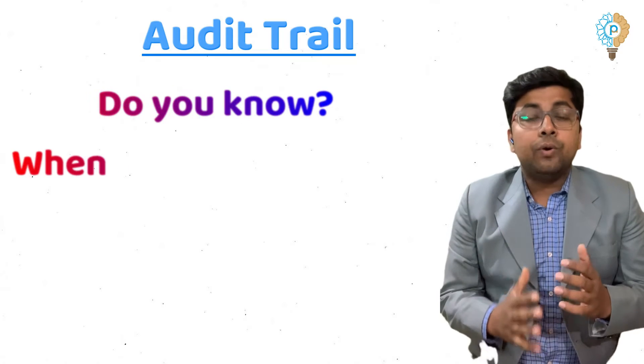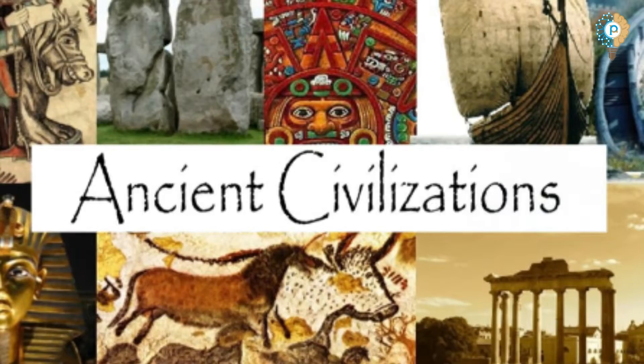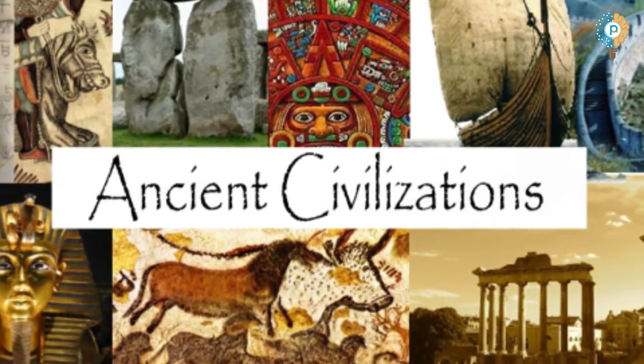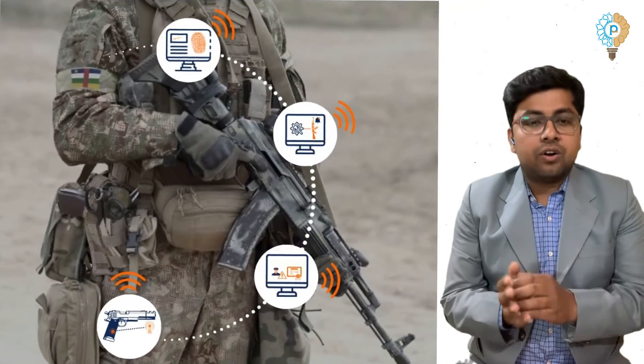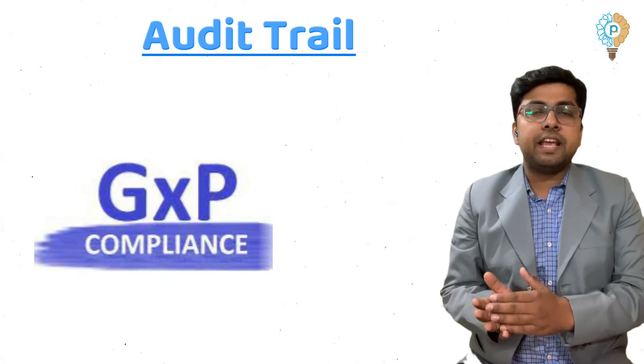It includes user management as well as process-related data. Do you know when and for what purpose the audit trail was first used? The audit trail first came into use during ancient times when a rudimentary method was introduced to help manage goods, soldiers, or any financial transaction information within a single platform. After that, audit trail came to the pharmaceutical or GXP environment.